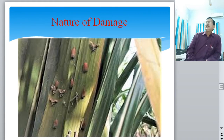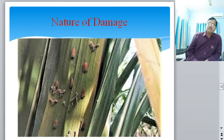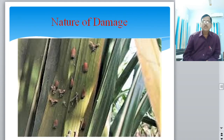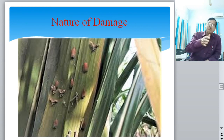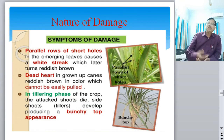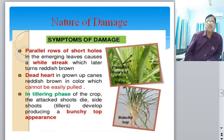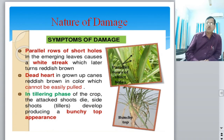Due to attack of this pest, the yield of canes, sugar recovery, and quality of jaggery all suffer badly. In severe cases there is a loss of 30 to 40% of sucrose. The rate of photosynthesis decreases, plant nutrition is reduced, growth is stunted, and sugar/sucrose content in the cane is less, reducing the sugar-yielding capacity.